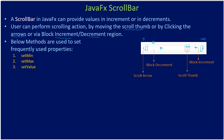Next, setValue — if you specify 80, the scroll thumb will go ahead and sit on that specific location. The same way you can also get the value to enquire what the current scroll thumb position is. setMinHeight lets you request the JavaFX layout to set a height, and similarly you can request the width using setMinWidth.